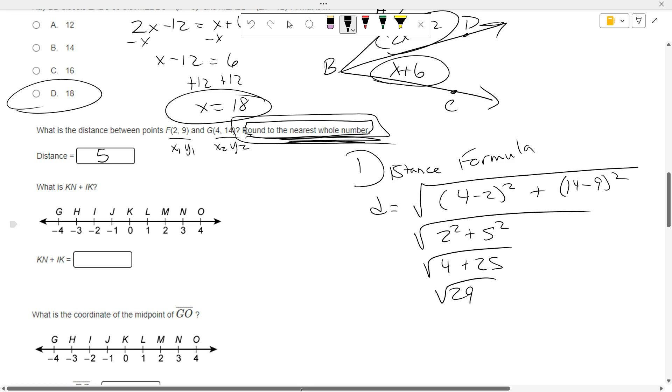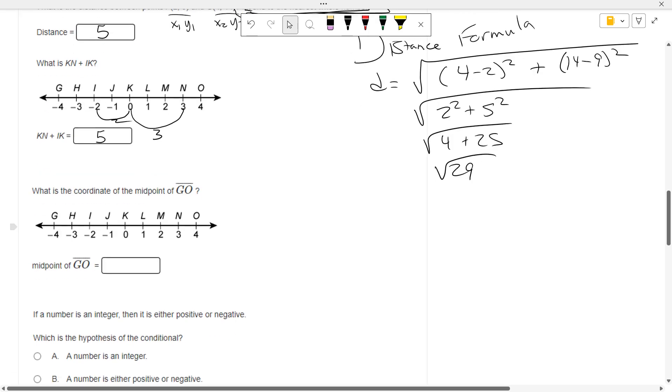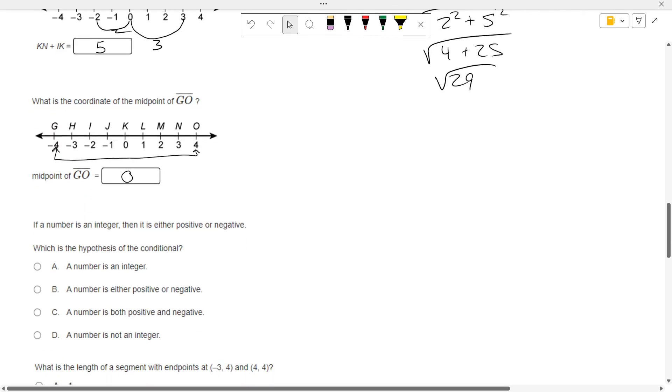So make sure you do what it says when you have directions like this. KN. K to N is 3. IK. I to K is 2. How long is KN plus IK? 5. What's the coordinate of the midpoint of G, O? G is at negative 4. O is at 4. What's halfway in between negative 4 and 4? 0. So the midpoint is at 0.